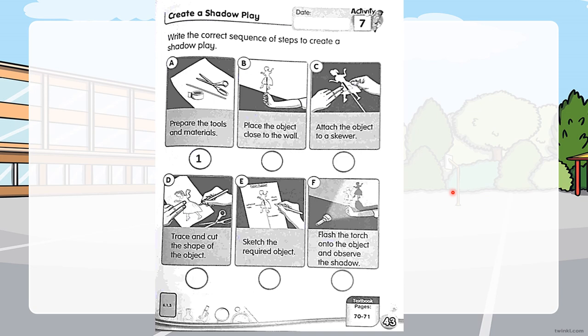Here are the answers for page 43. Number one: prepare the tools and materials. Number two: sketch the required object. Number three: trace and cut the shape of the object. Number four: attach the object to a skewer. Number five: place the object close to the wall. Number six: flash the torch onto the object and observe the shadow.